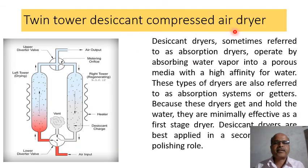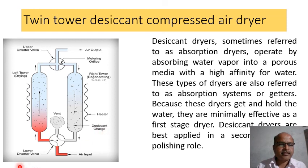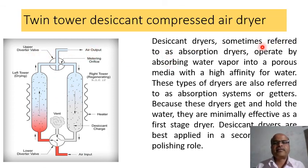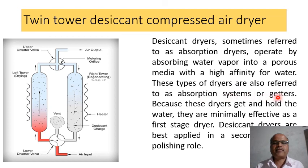Twin tower desiccant compressed air dryer: The diagram shows left tower, right tower, heater, desiccant charge, lower diverter valve, upper diverter valve, and air output. Desiccant dryers, sometimes referred to as absorption dryers, operate by absorbing water vapor into a porous media with high affinity for water. These types of dryers are also referred to as absorption systems. Because these dryers absorb and hold the water, they are minimally effective as a first-stage dryer.